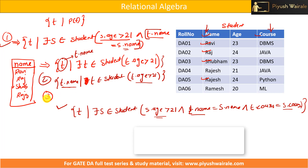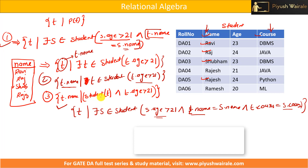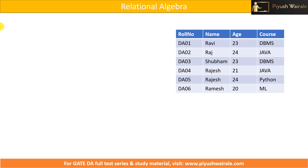There is one more way we can write a TRC expression. Even if we skip the 'there exists' part since t already belongs to student, that is also fine. For example: { t.name | Student(t) ∧ t.age > 21 }. Here Student(t) means t stands for the student relation. All three forms are correct TRC expressions for the same query.